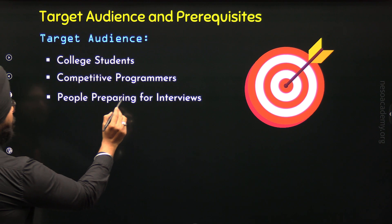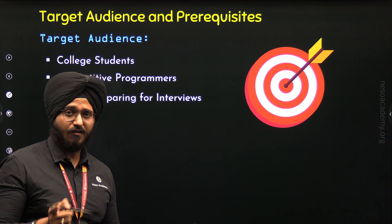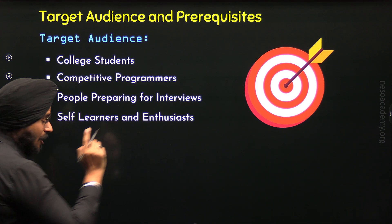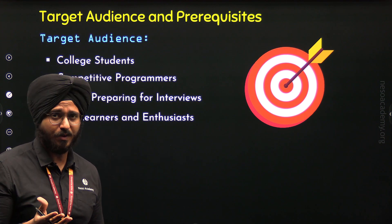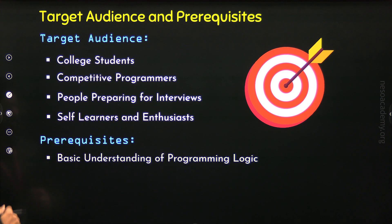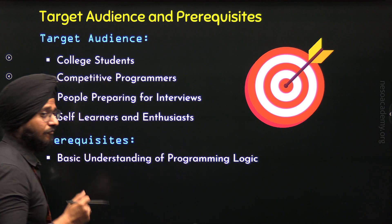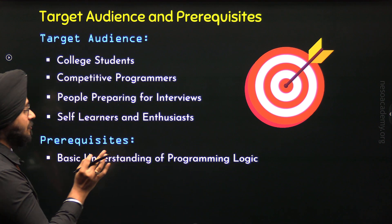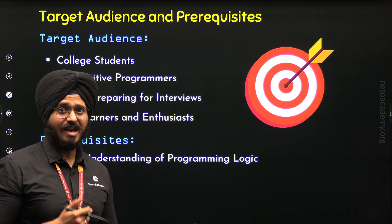The third type of audience is people preparing for interviews. If you are preparing for interviews, you can take this course because many topics covered here are commonly asked by interviewers. The fourth type is self-learners and enthusiasts who want to learn C++ for fun. Now for prerequisites: the first is a basic understanding of programming logic — if you know variables, data types, conditionals, loops, functions, and arrays, you can take this course easily. But if you don't, that's fine — I will cover those topics as we encounter them.